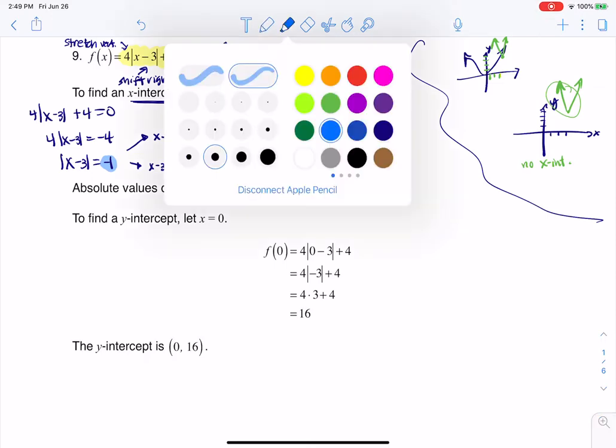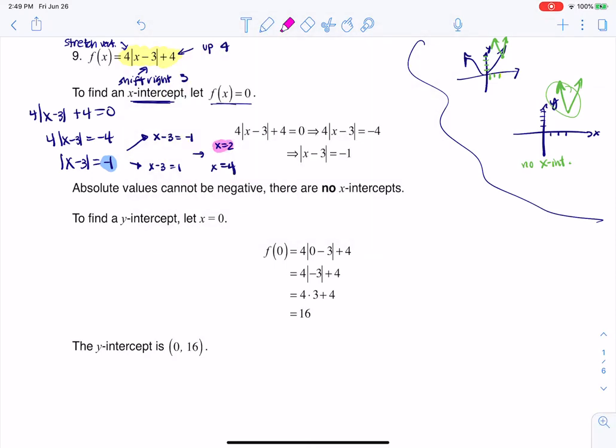And you might say, okay, there are my two solutions. I'm going to write them up as x-intercepts. But what you have to remember to do is you have to take these two numbers and plug them back into the original equation and see if they hold. And let's just do that for a moment. I'm going to try x equaling 2. So if I did 4 times the absolute value of 2 minus 3 plus 4, is that equal to 0?